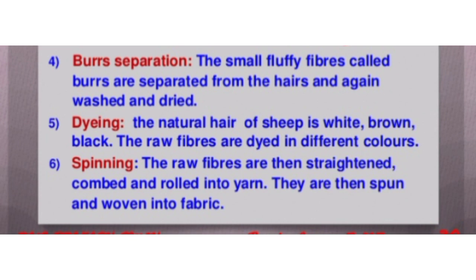The last step is spinning. In this step, the fibers are straightened, combed, and rolled into yarn. The yarn is formed after this long process - the fibers are spun and woven into fabrics. The longer fibers are made into wool for sweaters and the shorter fibers are spun and woven into woolen clothes. This is the last step of processing fibers into wool.